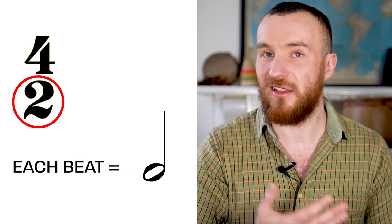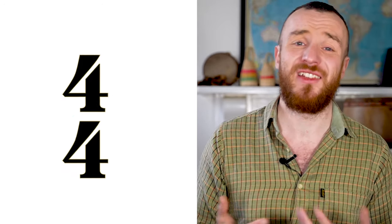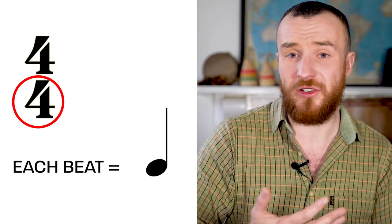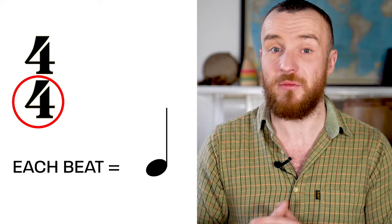If we have a two on the bottom, we are counting each beat as a minim or as a half note, as you'd say in the States. If we have a four on the bottom, we're counting each beat as a crotchet or as a quarter note. And I'd say that this is the most common bottom number you're likely to see in a piece of music.